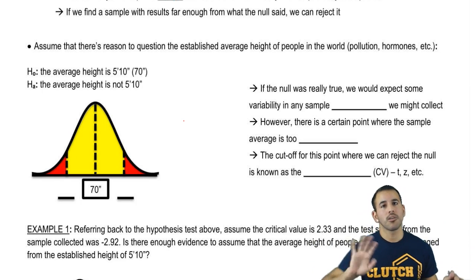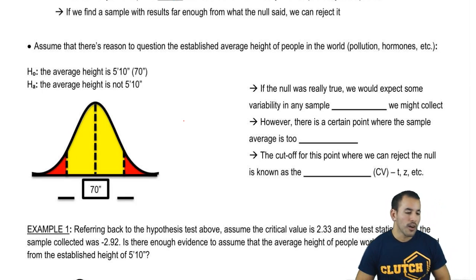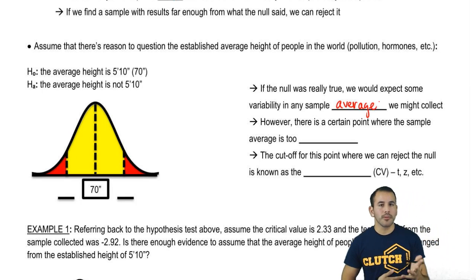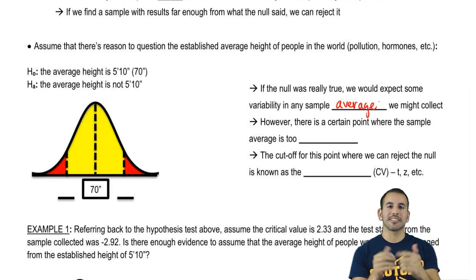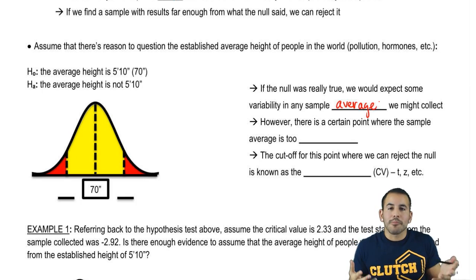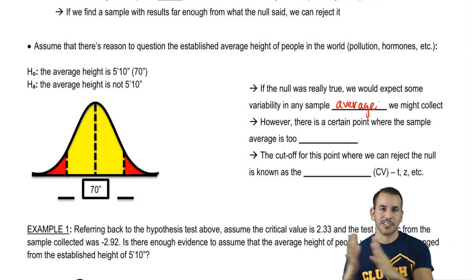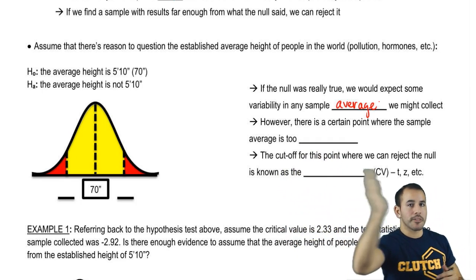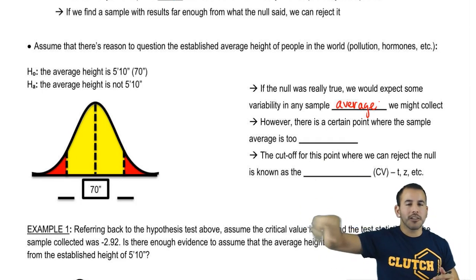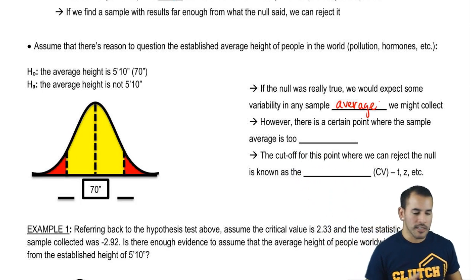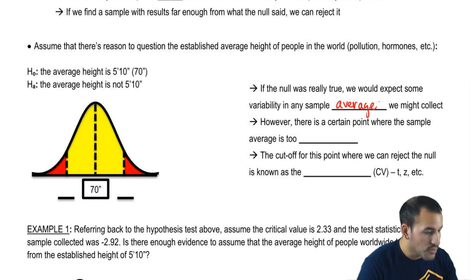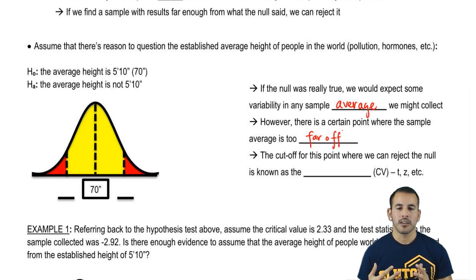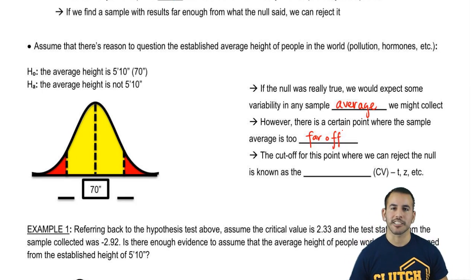We don't know if the height is bigger or less than 70 inches. Now, if the null were really true, we would expect some variability in any sample average we might collect. Remember from sampling distributions, there's always some variability. Most samples are going to have an average around 70, with some extreme cases on either side. However, there is a certain point where the average is too far off, and we need a cutoff to determine when that is.